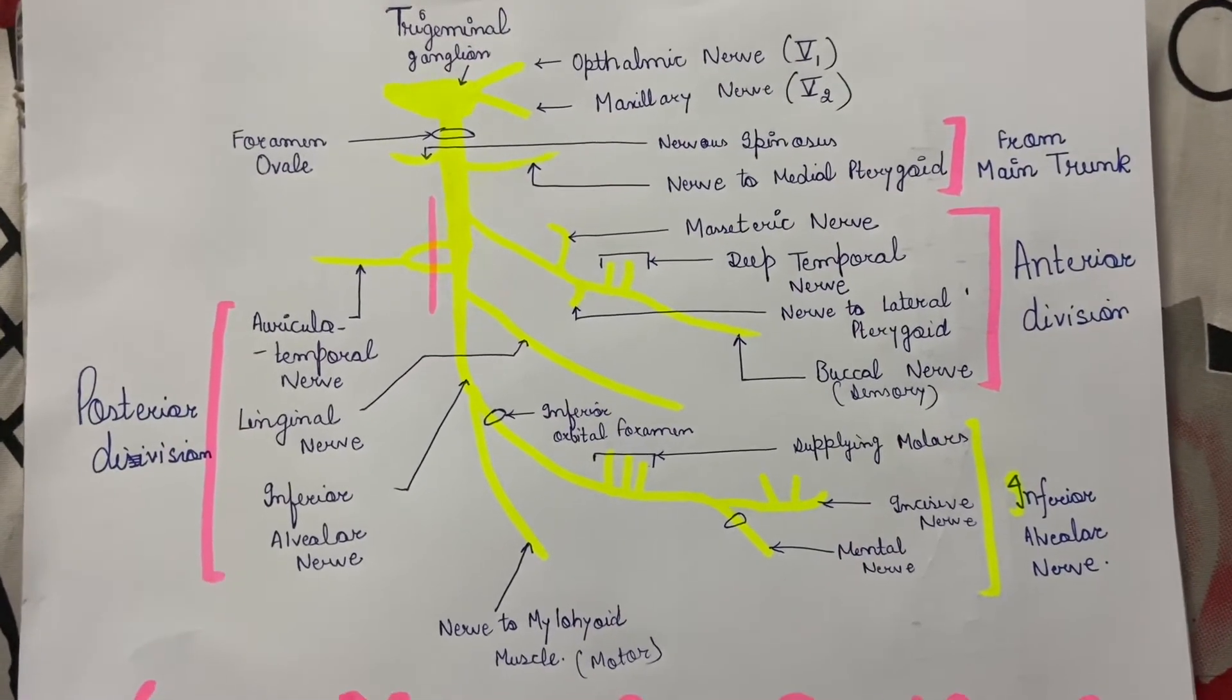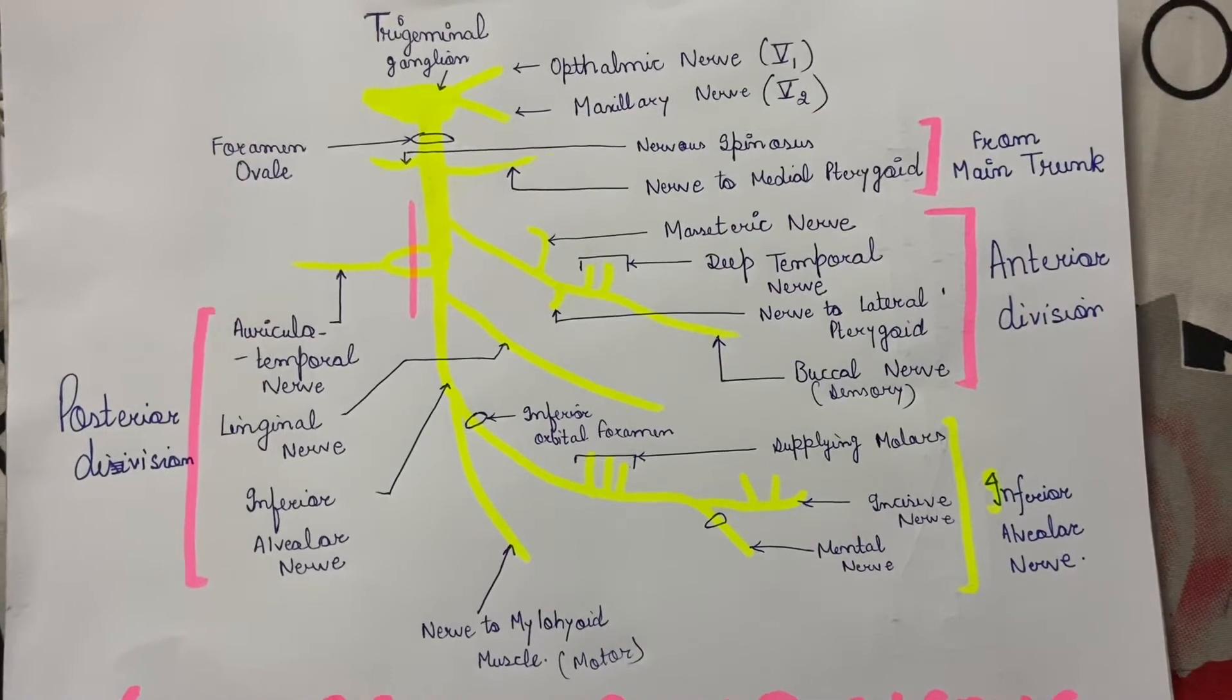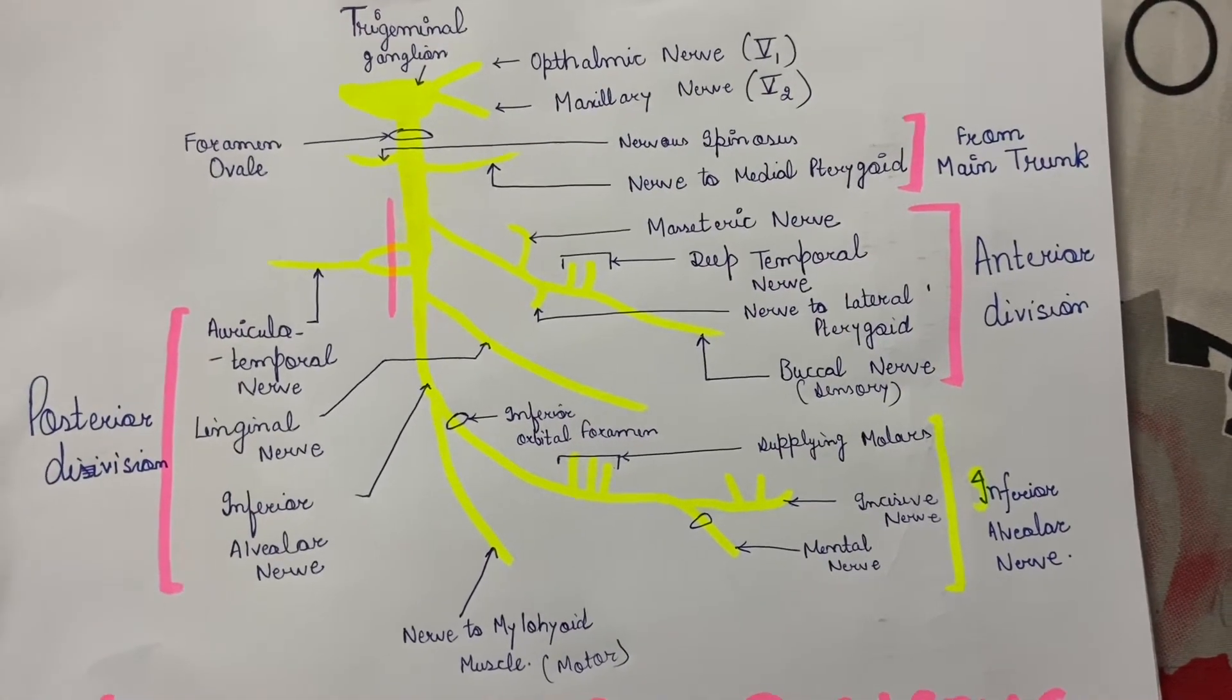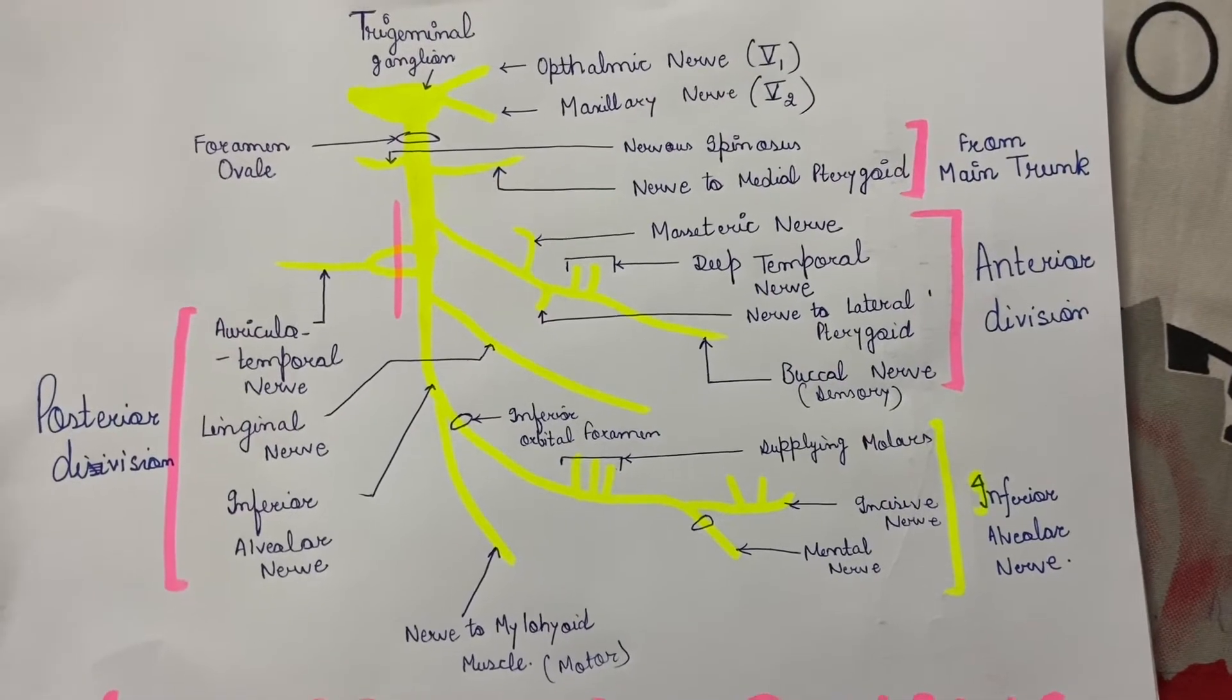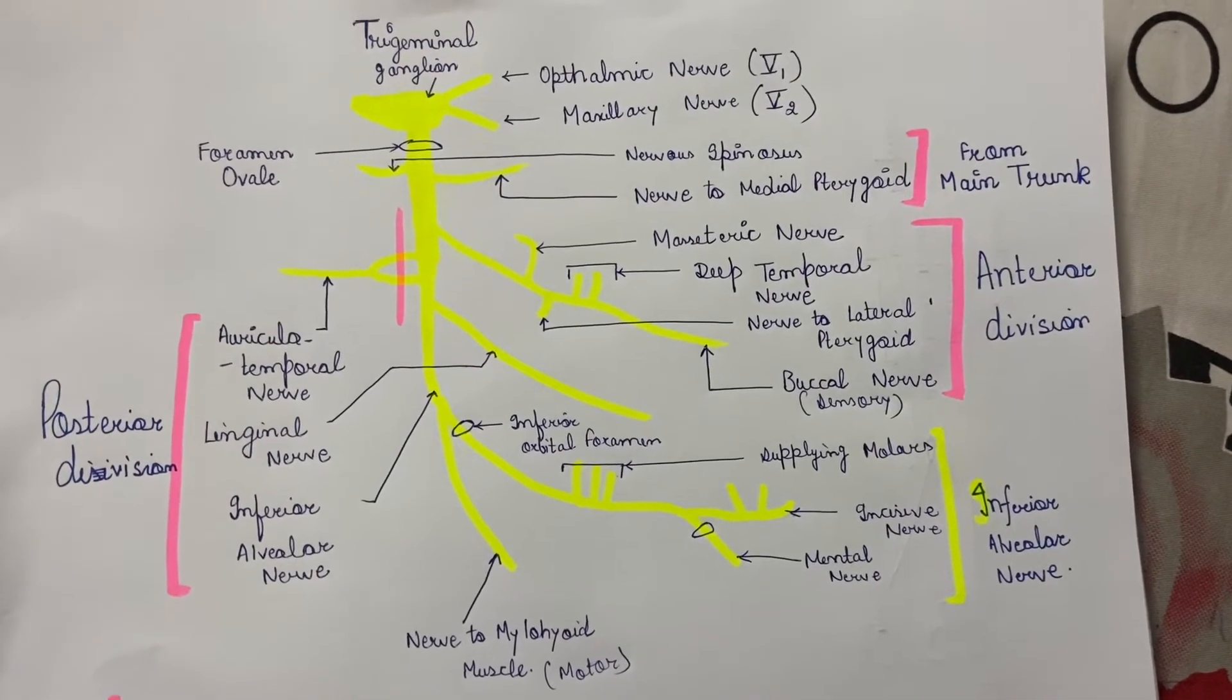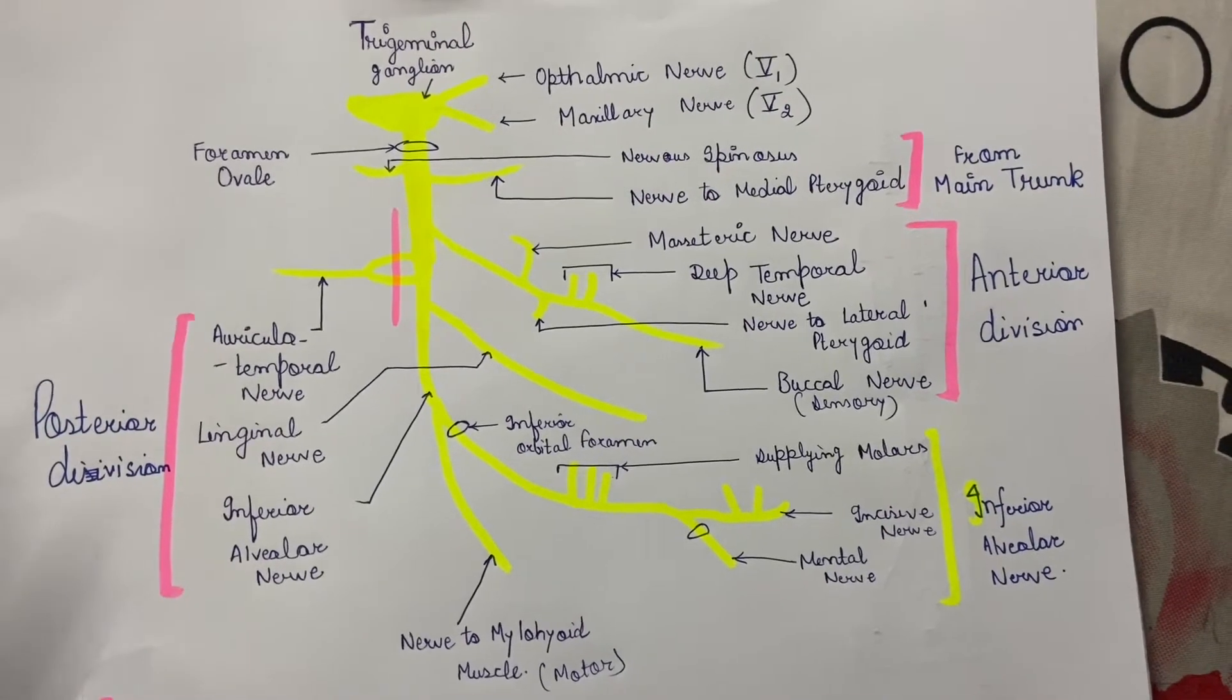The mandibular nerve is the largest division of the trigeminal nerve. It contains both sensory as well as motor fibers. We will start its root from the cranium to the areas where it supplies.